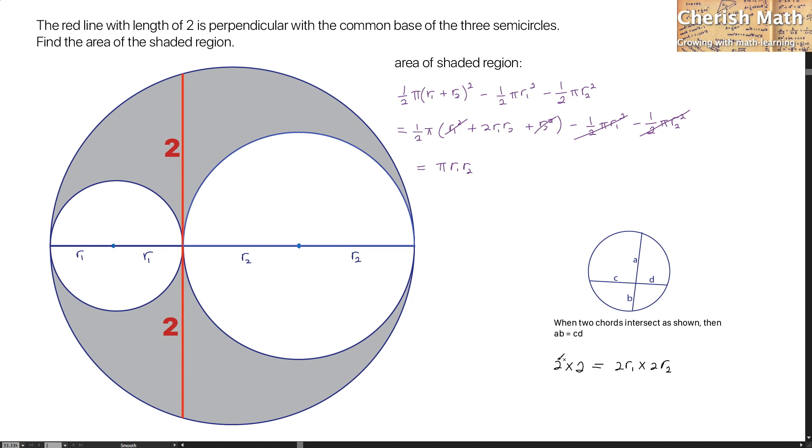Let me simplify. So, the value of R1 times R2 is equal to 1. By substituting the value R1 times R2 as 1 into the equation of the area of the shaded region, the value of the area I'm going to get here is pi unit squared.